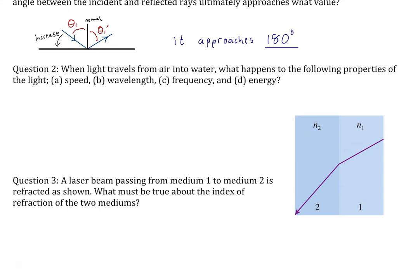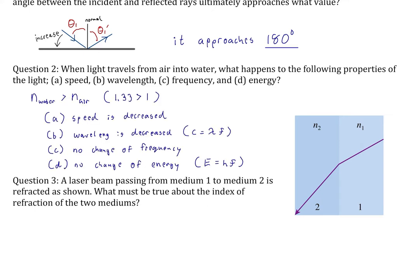Question two is about refraction. When light travels from air into water, what happens to the following properties of light? The refractive index of water is greater than air — about 1.33 — which is greater than 1. So the speed is decreased; light effectively slows down when it enters water. The wavelength is decreased because the same period means the wave front travels less distance. There's no change in the frequency, no change in the energy since energy depends entirely on frequency, and no change in the period.